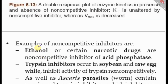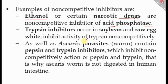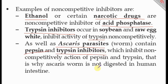Real examples of non-competitive inhibitors include: ethanol and certain narcotic drugs, which are non-competitive inhibitors of acid phosphatase; trypsin inhibitors found in soybean and raw egg white, which inhibit trypsin non-competitively; and ascaris worms, which contain pepsin and trypsin inhibitors.